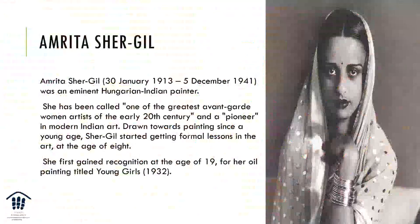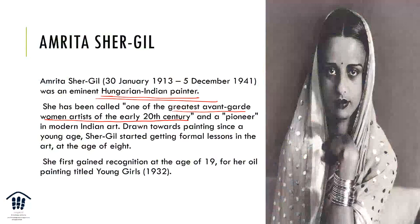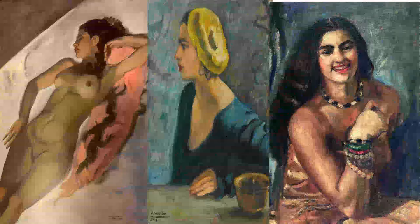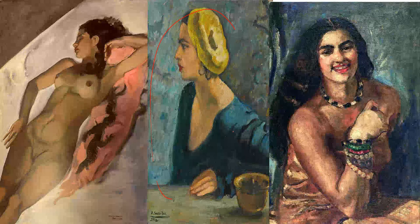Another great painter who didn't live very long was Amrita Sher-Gil, a Hungarian-Indian painter. If you're in Delhi, you'll find Amrita Sher-Gil Marg named after her. She was one of the greatest avant-garde women artists of the 20th century and a pioneer in Indian art. She was drawn to painting at an early age; at 19 she received recognition for her painting Young Girls. These are a few of her works — all self-portraits — naturalistic in style and quite distinct from other schools.